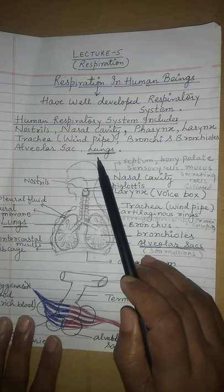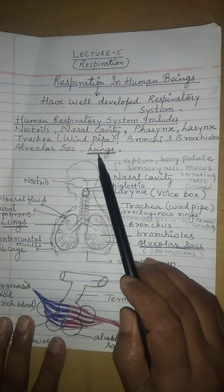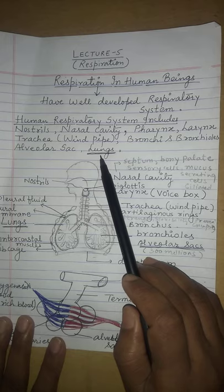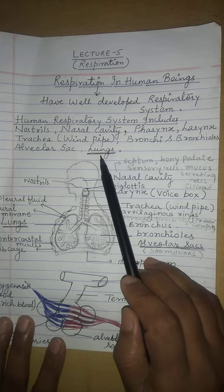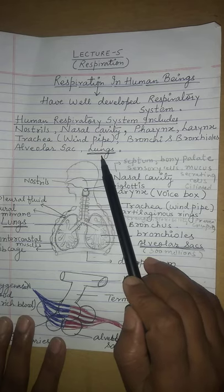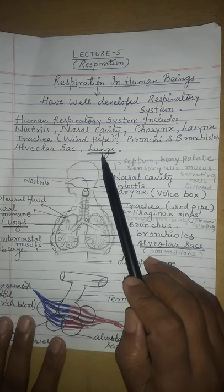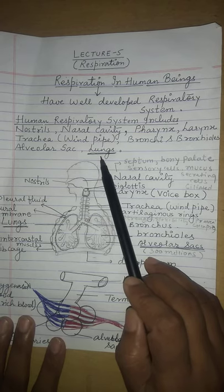Keep your attention on this: if someone asks what is the organ of respiration in human beings, the answer is the lungs. The lungs are the main organ for the respiration process, as the lungs are where the oxygen present in the atmosphere is processed.